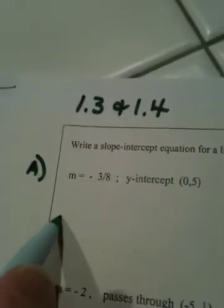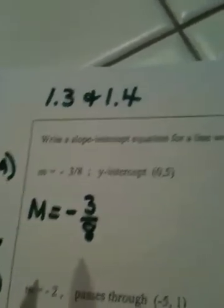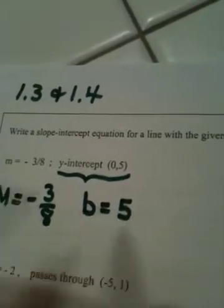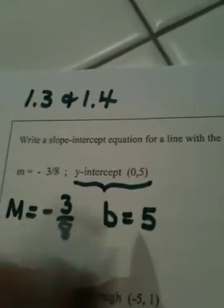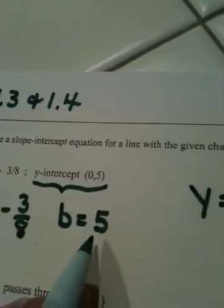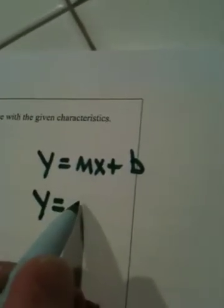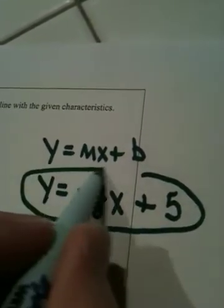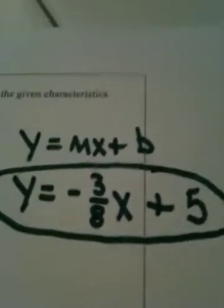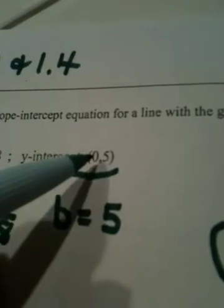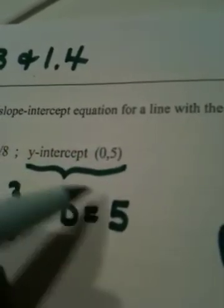So let's start with A — it's a simple problem. M is negative 3 eighths, and the point 0 comma 5 really means B is 5. So they gave us M and they gave us B. All we have to do is go to y equals MX plus B and fill in the data that we know: negative 3 eighths for M and 5 for B. So the equation of the line is y equals negative 3 eighths X plus 5. That first one was pretty simple — there was really almost no work.